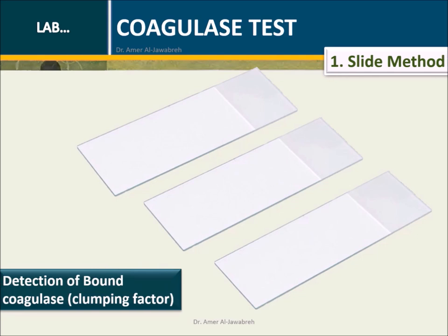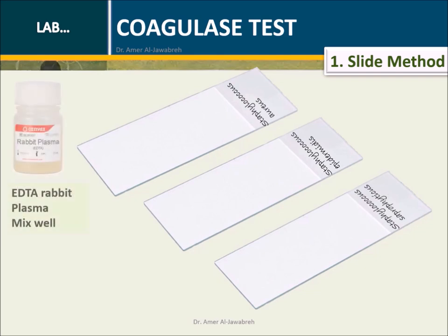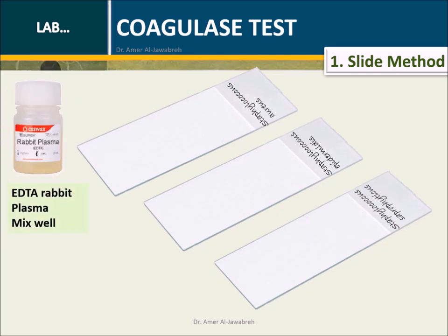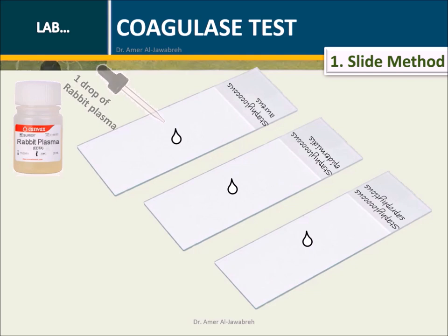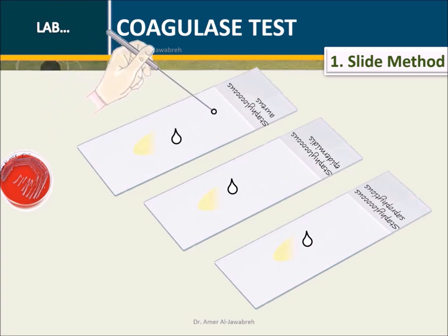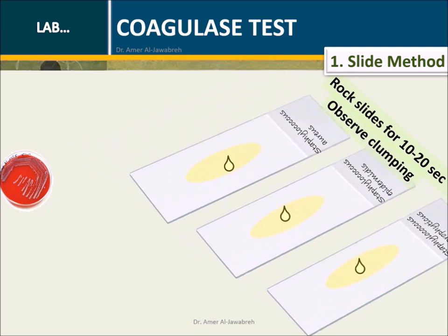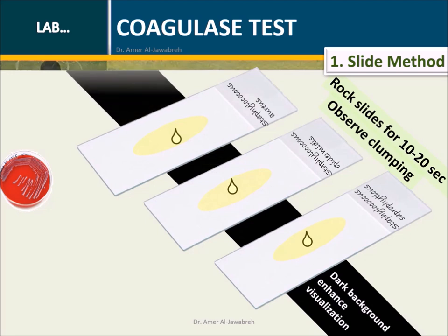Slide method: Label slides. Mix plasma well. Place a drop of plasma on each slide. Emulsify a loopful of colonies into the drop of plasma on each slide. Rock slides for 10 to 20 seconds. Observe for visible clumps for up to one minute on a dark background.